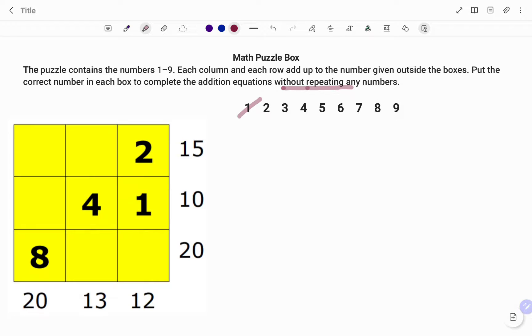We have 1, we have 2, we have 4, and we have 8. We are left with 3, 5, 6, 7, and 9.